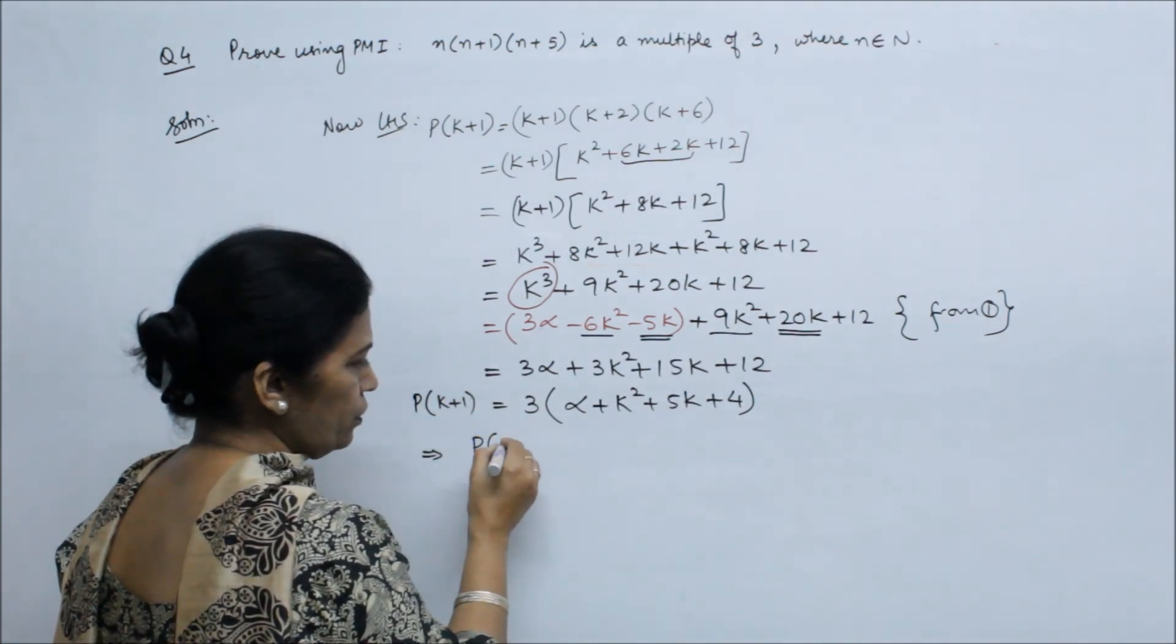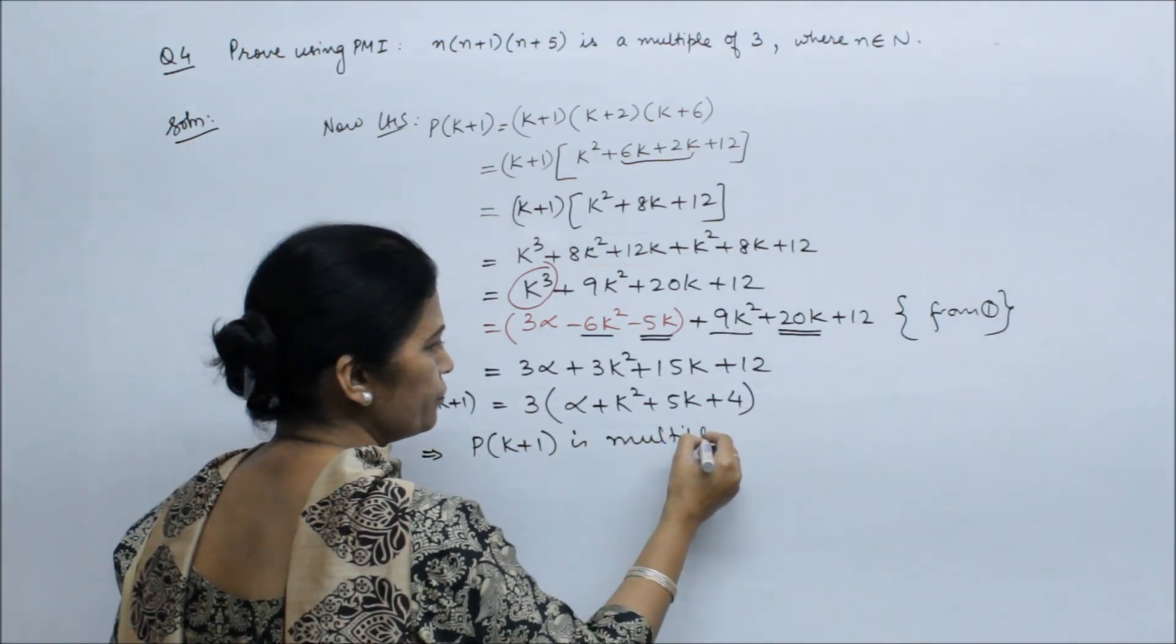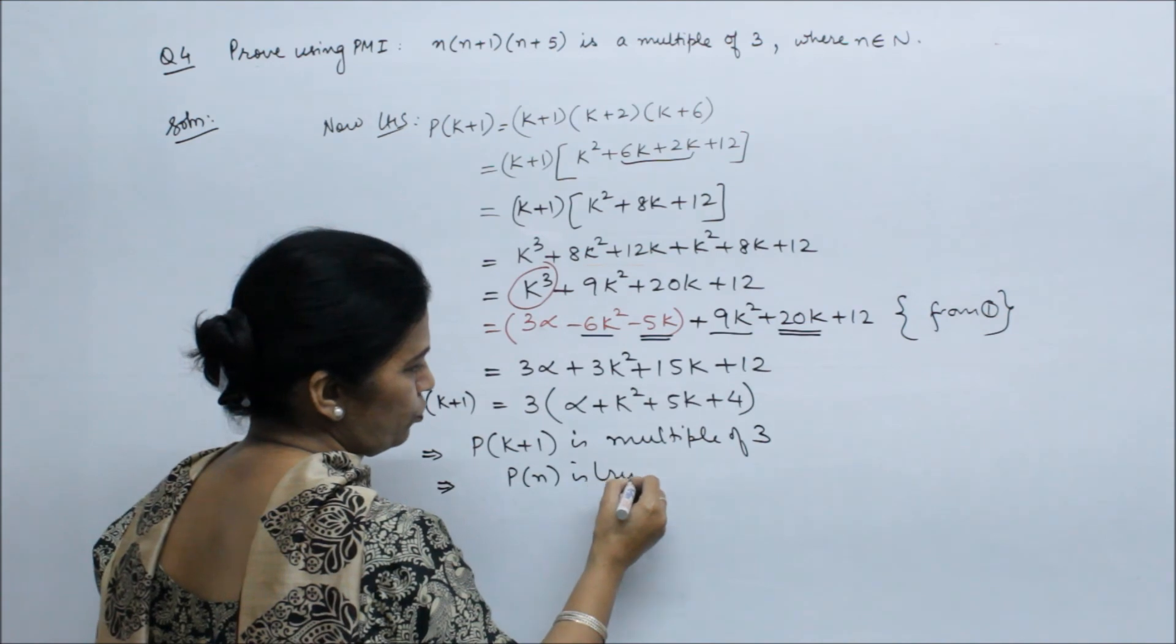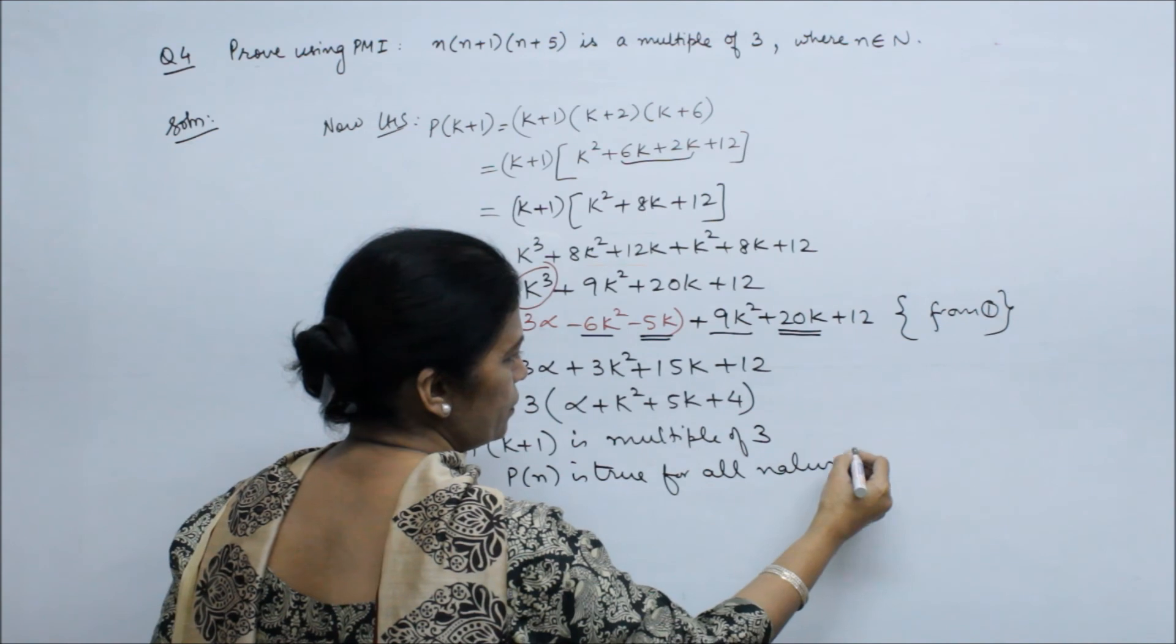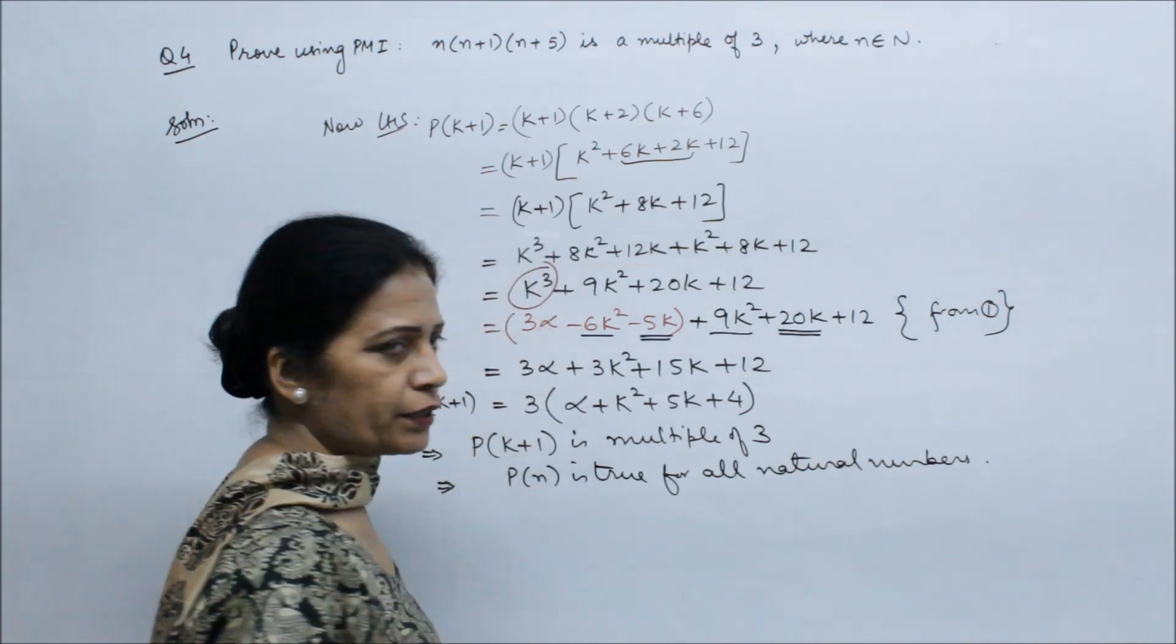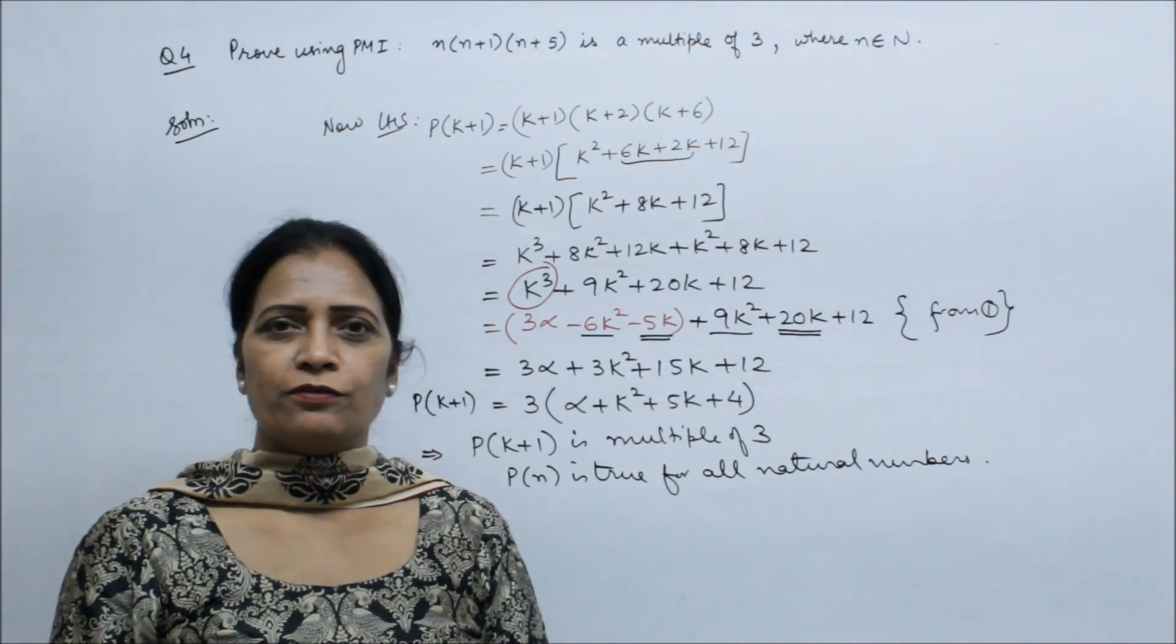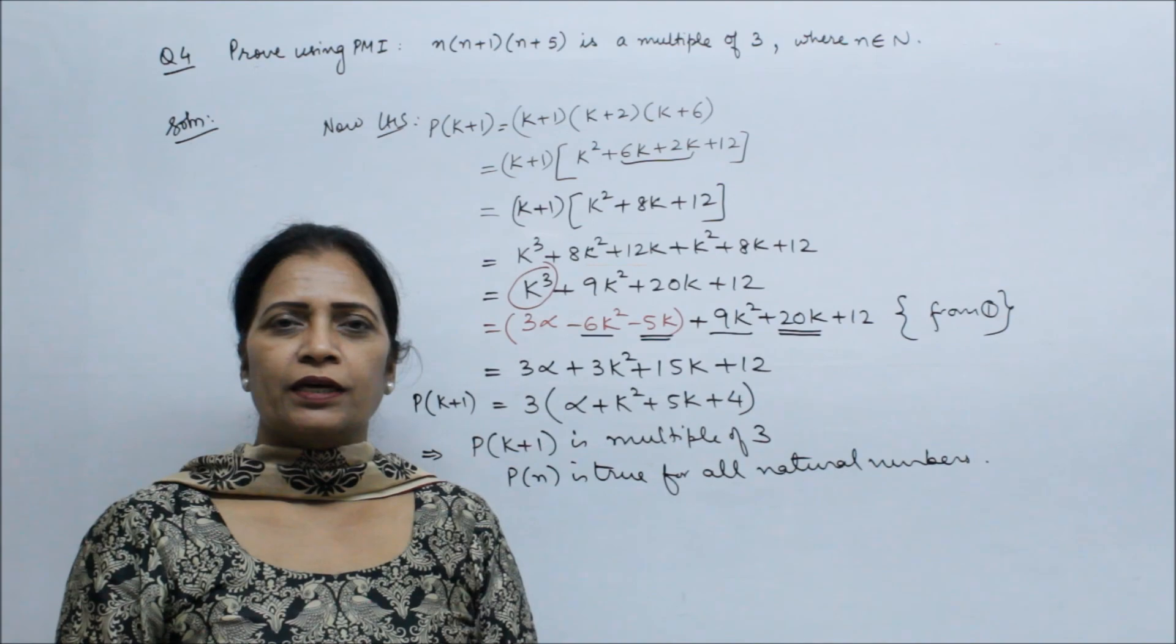So this shows P(k plus 1) is multiple of 3. This gives P(n) is true for all natural numbers. Please like the video and subscribe to our channel. Thank you and all the best.